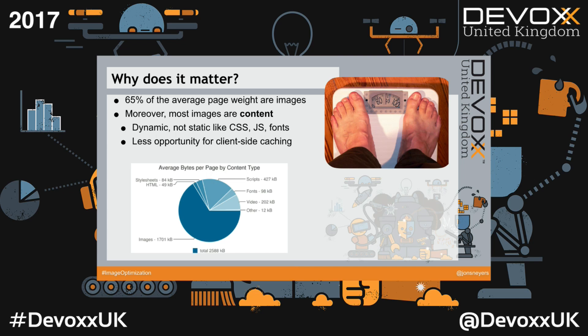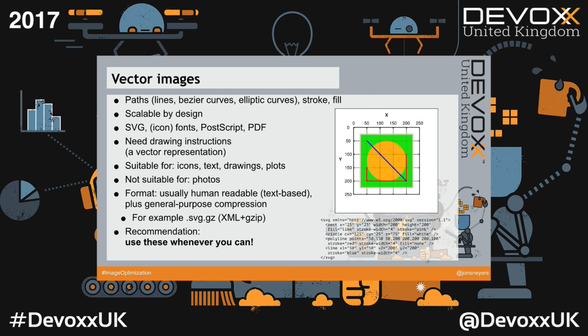Why does image optimization matter? 65% of an average website is images in terms of bytes. Moreover, most of these images are part of the content of the website, just like the HTML. Unlike style sheets, JavaScript, or fonts — which don't change very often — images do change very often. There is not much opportunity for client-side caching, so a lot of the bytes that slow down your website or mobile application are images. If you are optimizing things, it is the first thing you should look at.